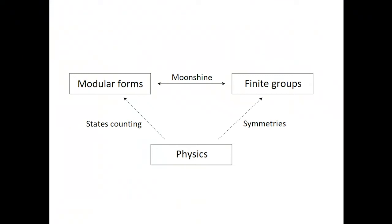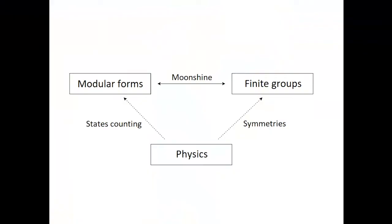In one slide, the idea of moonshine can be summarized: you have a physical system, and a generating function counts how many quantum states you have at a given energy level, giving you an infinite Q-series. With favorable conditions — for instance, if you are dealing with string theory — this has to be a modular form of some kind, which then has to know about your finite groups. That gives rise to the seemingly mysterious relation between finite group representation theory and modular forms.